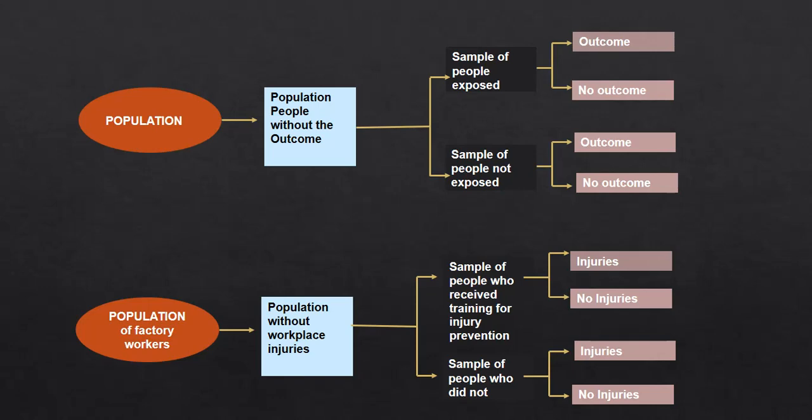The point is he'll follow up, and in the end he'll check for the outcome. The outcome is injuries, whether or not they got workplace injuries or not. So in the end of this, he'll be able to see if you received the training and you got less injuries, so if the people who received training got less injuries overall, then that means there is some sort of a correlation. You can run some analyses on it and figure a lot of stuff out with cohort studies.